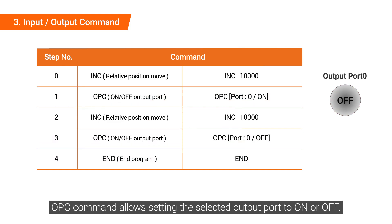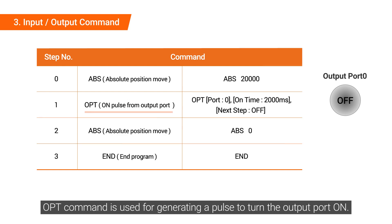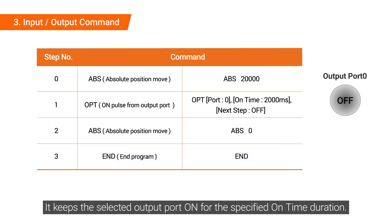The OPC command allows setting the selected output port to on or off. The OPD command is used for generating a pulse to turn the output port on, keeping the selected output port on for a specified on-time duration.